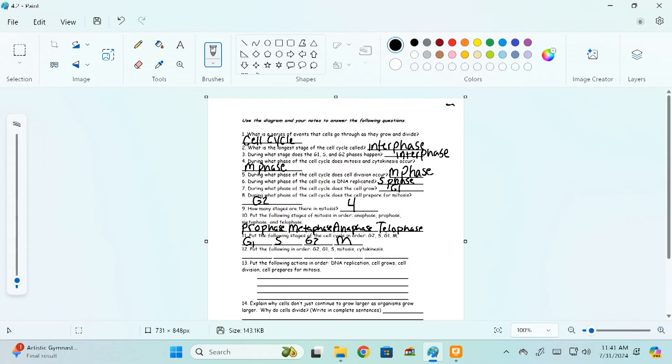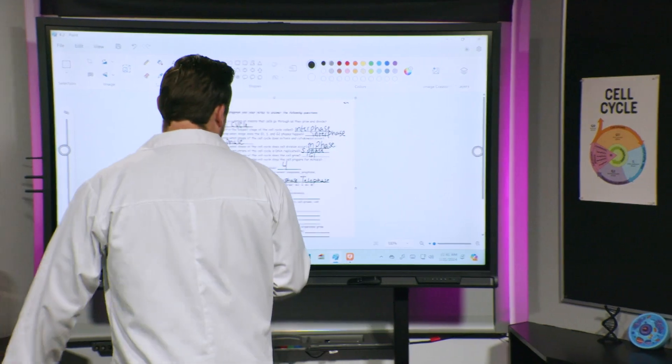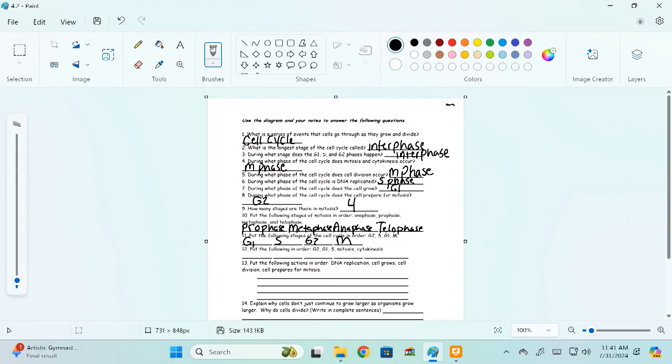All right, so then put the following in order. And we have some similar terms here and some different ones, but the first three are going to be the same. It goes G1, S, G2, and then mitosis happens next. And then the last part is cytokinesis. Great job.